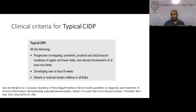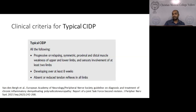There are clinical criteria for each typical CIDP and variant CIDP, and based on these, a diagnostic categorization is made. Typical CIDP should have all of the following clinical features: progressive or relapsing, symmetric, proximal and distal muscle weakness of upper and lower limbs, sensory involvement of at least two limbs developing over at least eight weeks, and absent or reduced tendon reflexes in all limbs.